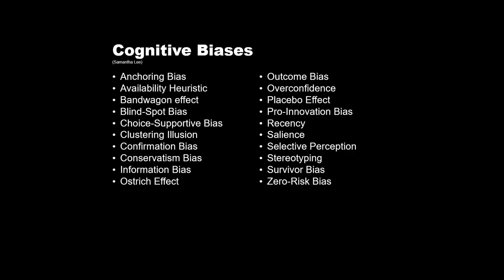There are many other different types of biases and I will include them in a handout. Just know that our brains have many ways of creating illusions and false connections between information.